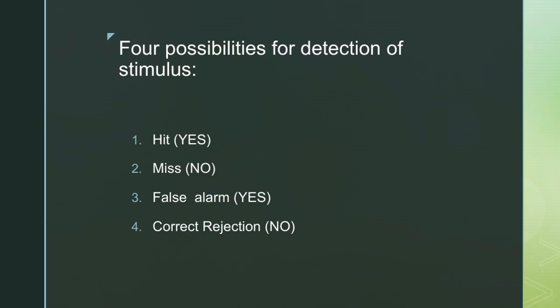The four possibilities for detection of stimulus include: hit (yes), miss (no), false alarm (yes), and correct rejection (no). In a hit, the observer's response is yes because he really detected the stimulus. In miss, the stimulus was present but the person says no — he knows the truth but is hiding it. In false alarm, he hasn't detected the proper stimulus but makes his own predictions and says yes.